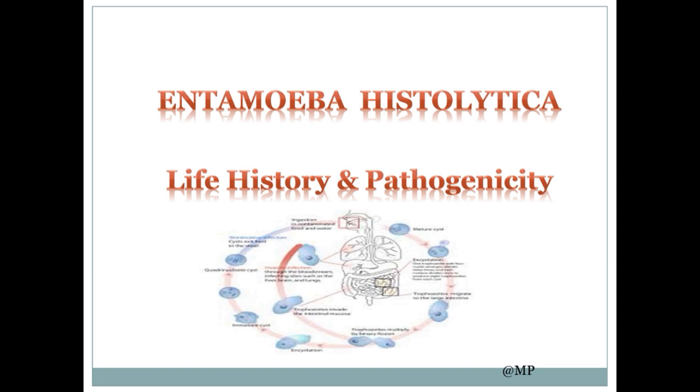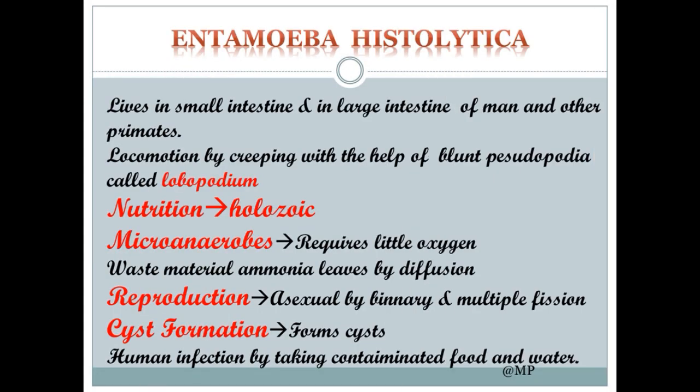The first organism is Entamoeba histolytica. It lives in the small intestine and large intestine of men and other primates. Locomotion is by creeping with the help of blunt pseudopodia called lobopodium. Nutrition is holozoic type. It is micro-anaerobic, requiring very little oxygen. Waste material, ammonia, leaves the body by diffusion.